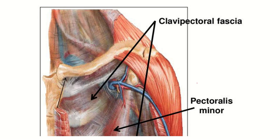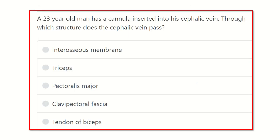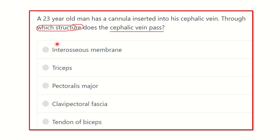Welcome to this question and answer session. The question: a 23-year-old man has a cannula inserted into the cephalic vein — through which structure does the cephalic vein pass? The options are: interosseous membrane, triceps muscle, pectoralis major muscle, clavipectoral fascia, and tendon of the biceps.